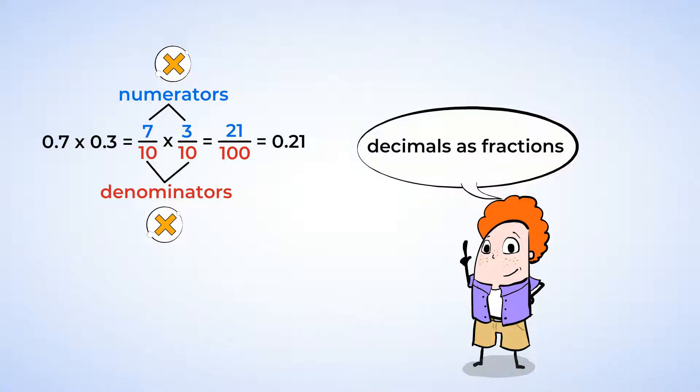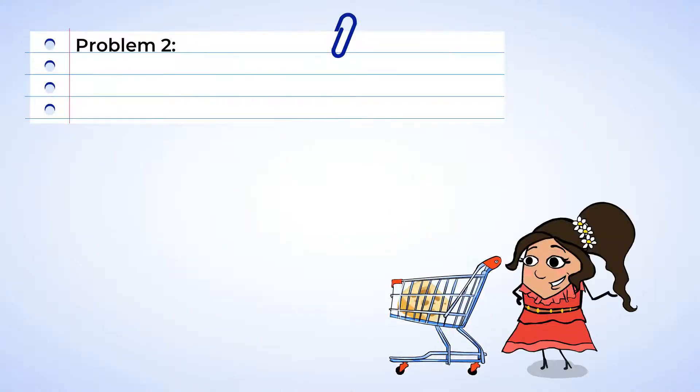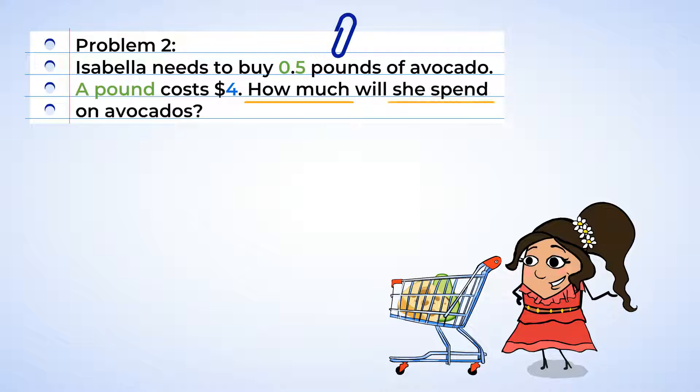Now let's catch up to Isabella to help her with her shopping. Alright, she needs to buy 0.5 pounds of avocado for a delicious guacamole. Hope we're gonna get chips too. Now a pound of avocados costs $4. So how much will she spend on avocados? Alright, here's a little challenge for you. Now leave your pen and paper aside, and let's try to answer the question in our heads. It's mental math time!